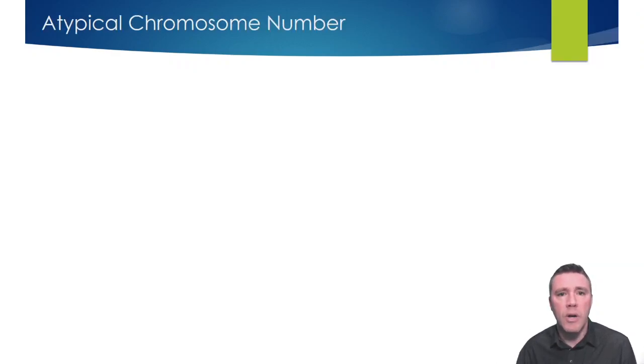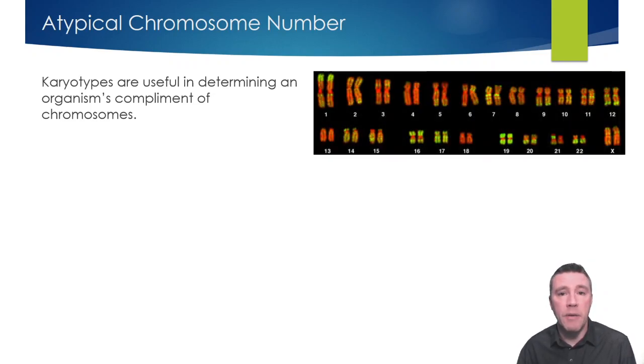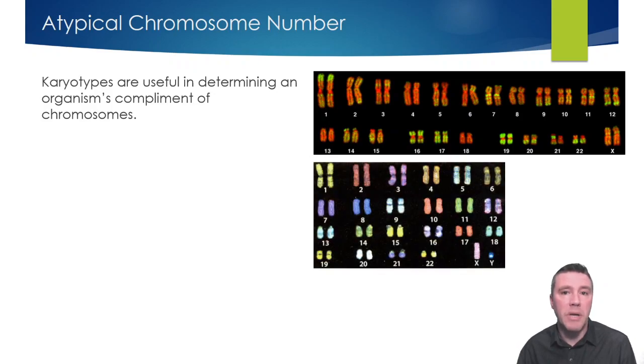If a sperm cell or egg cell with an atypical complement of chromosomes, either too many or too few, is used to form a zygote, phenotypic consequences are likely to result. Karyotypes are useful in both observing an organism's set of chromosomes and diagnosing any potential conditions. Showing an individual's complete collection of chromosomes, we can see whether someone is genetically female or genetically male based on their sex chromosomes, and if they have an appropriate set of 44 autosomes.